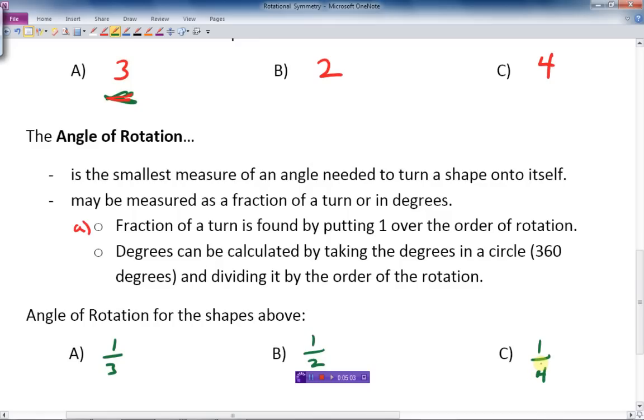Now, what about the degrees? If I wanted to find the degrees, so we did the fraction. What about the degrees? Well, calculate it by taking the degrees in a circle, which is 360. We take 360 and we divide it by the order of rotation. So divide that by 3, and it gives me 120 degrees. So mathematically speaking, we often use the degrees to answer this question.